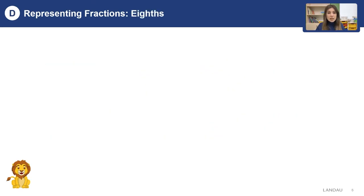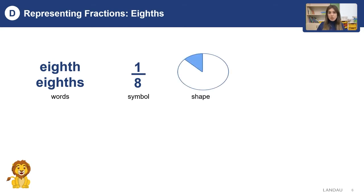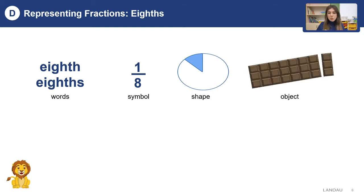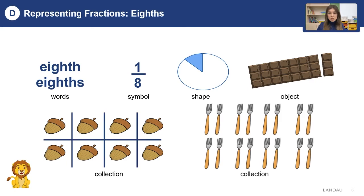What is eighths? Eighths means to share something, an object or a collection, by eight people. It can be represented by the word 'eighths' and as the symbol one over eight. As the shape, you can see this in a circle. And as the object, for example, chocolate — two parts of it is one eighth. And look at the collections with nuts and forks — just two of the forks out of all of them is one eighth.